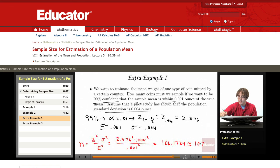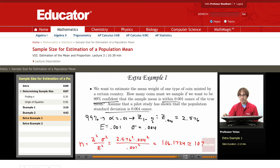So we have to sample at least 107 coins to be within .001 of an ounce at a 99% confidence level.